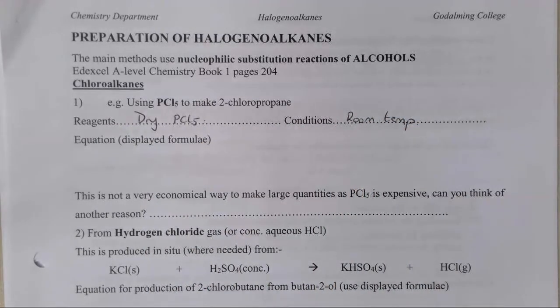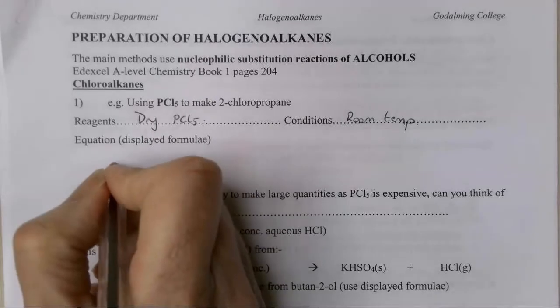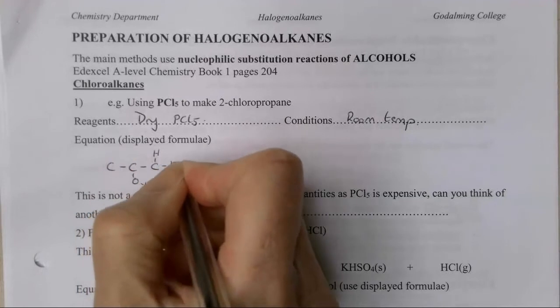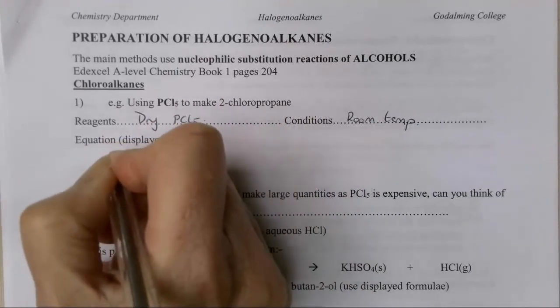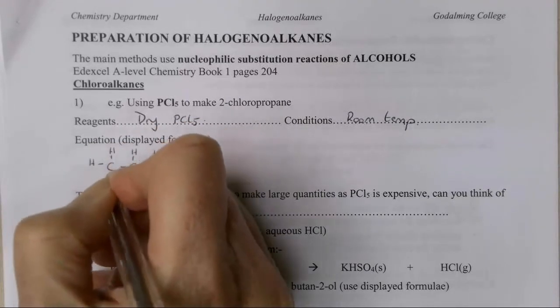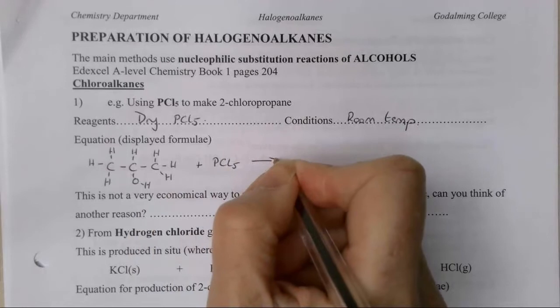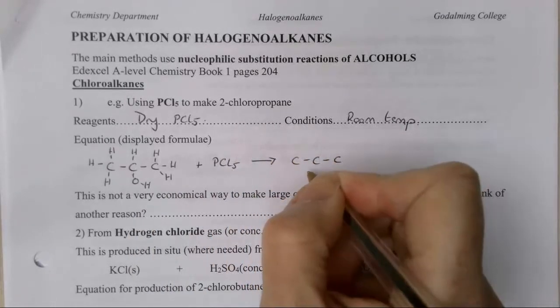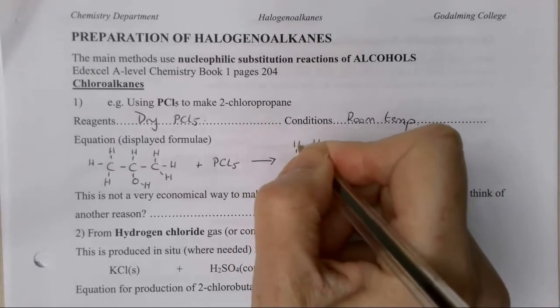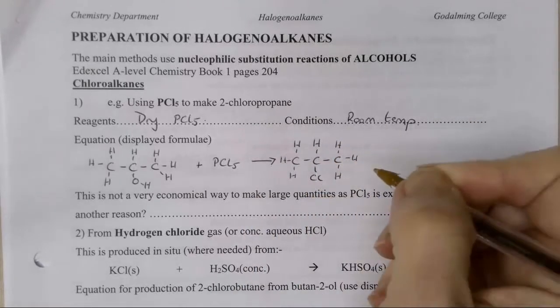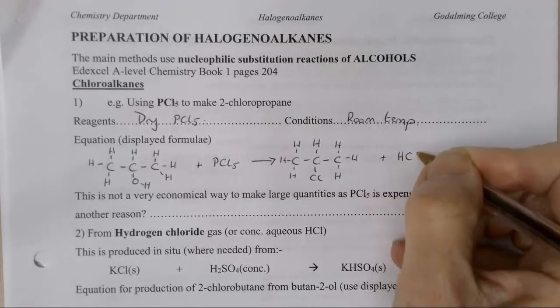Our reagents are just dry PCl5 and conditions are room temperature. It has to be dry because PCl5 also reacts with water. So if I want to make 2-chloropropane, I need to start with propan-2-ol. Wherever I want the chlorine to end up, that is where the OH group has to start.